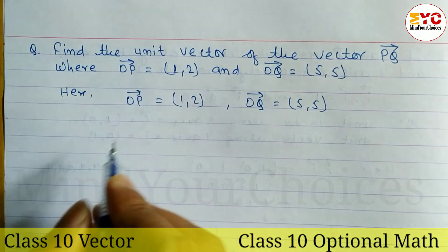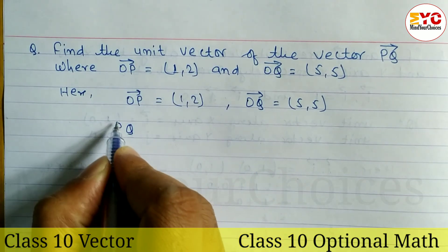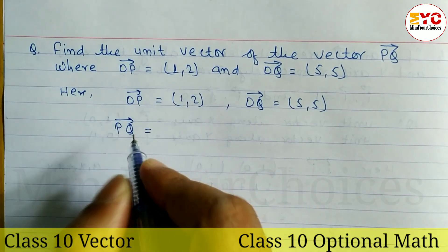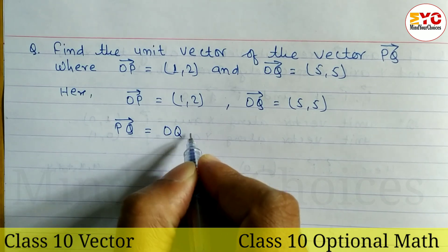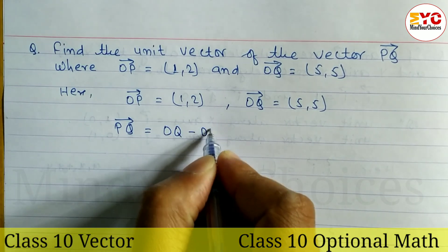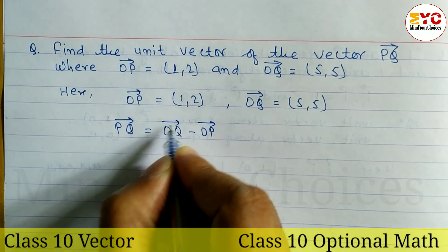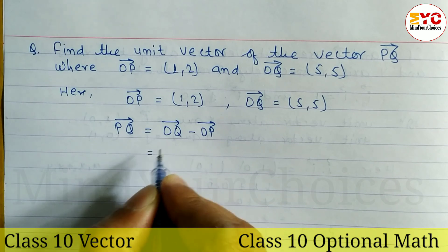We have to find the unit vector of PQ. First, let's find out PQ. The formula is: PQ equals OQ minus OP.